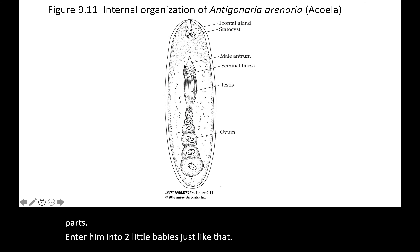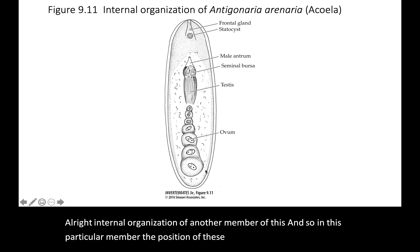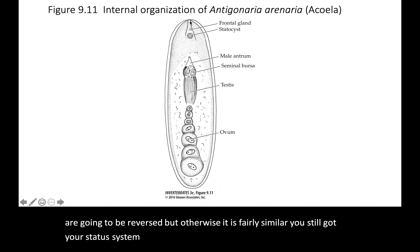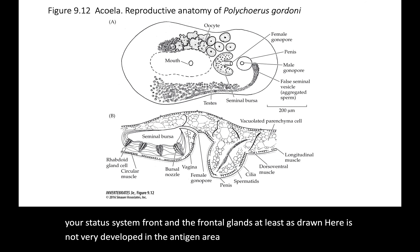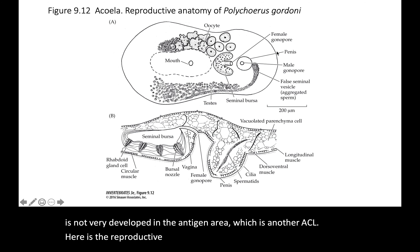Here's the internal organization of another member of this group. In this particular member, the positions of eggs and sperm are reversed, but it is otherwise fairly similar — you still have your statocyst up front. The frontal glands in Antigonaria, another Acoela, are not very developed as drawn here.